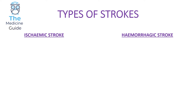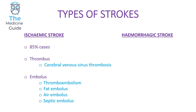Strokes can be categorised as either ischemic or hemorrhagic. 85% of all stroke cases in the UK are ischemic, making them far more common. An ischemic stroke can arise from a thrombus or an embolus. An example of a thrombus leading to ischemic stroke involves cerebral venous sinus thrombosis. Examples of an embolus include thromboemboli — typically from emboli that sludge in atrial fibrillation — as well as fat embolus, air embolus, and septic embolus.